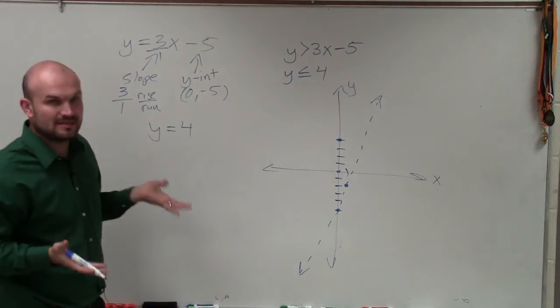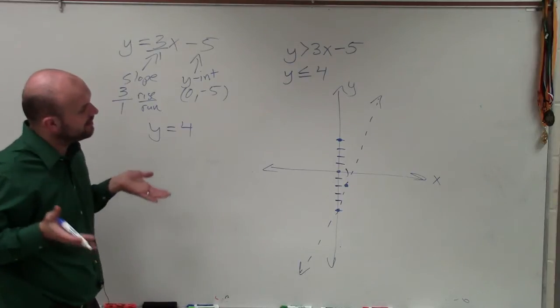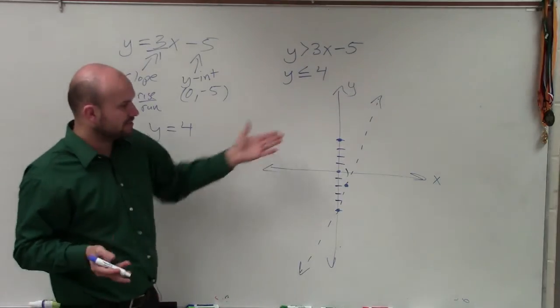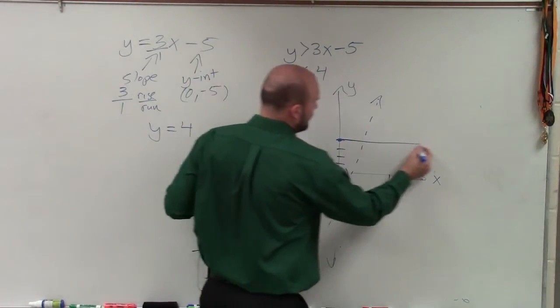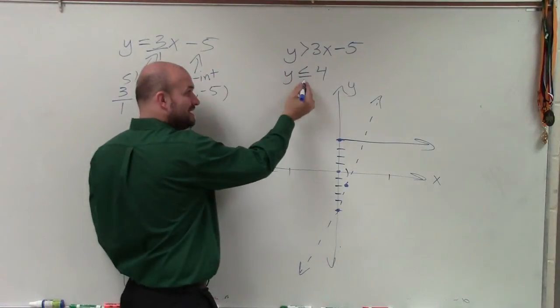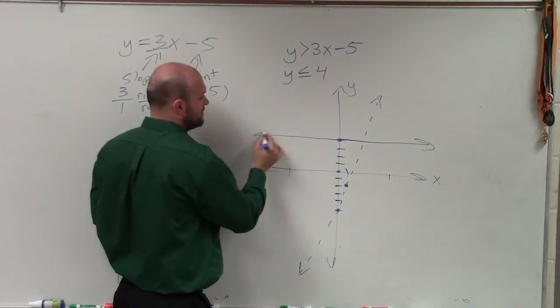But what it's saying, y is always going to be equal to 4. We're looking for a line that we can write when y is equal to 4. So it doesn't matter if x is 5, x is negative 2. It doesn't matter, y is always going to equal 4. And since that is less than or equal to, this equal to tells us we're going to have a solid line.